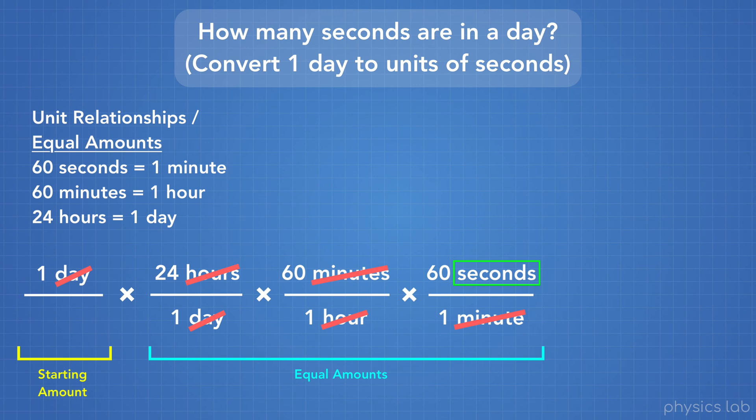The only unit that we haven't crossed out is seconds, and that's the unit we want our answer to be in. So there's the answer to our question. When we write these relationships, or equal amounts, we put the right one on the top or bottom, so that we can cross units out, and end up with only the unit that we want.